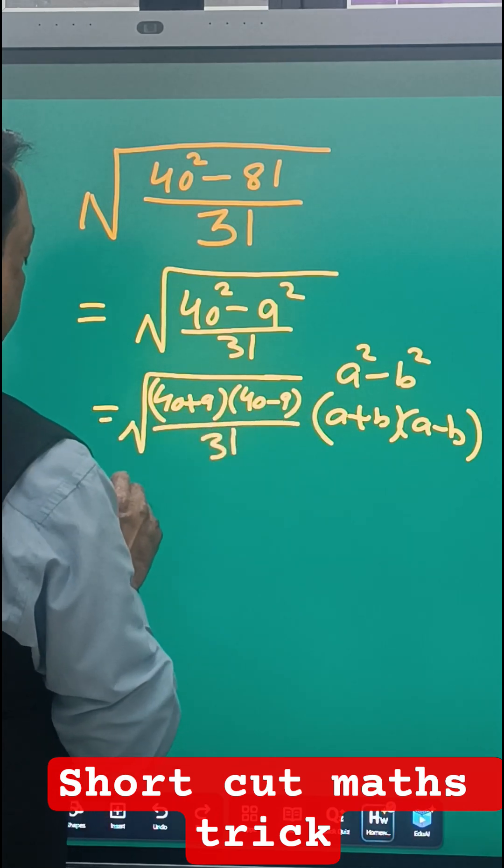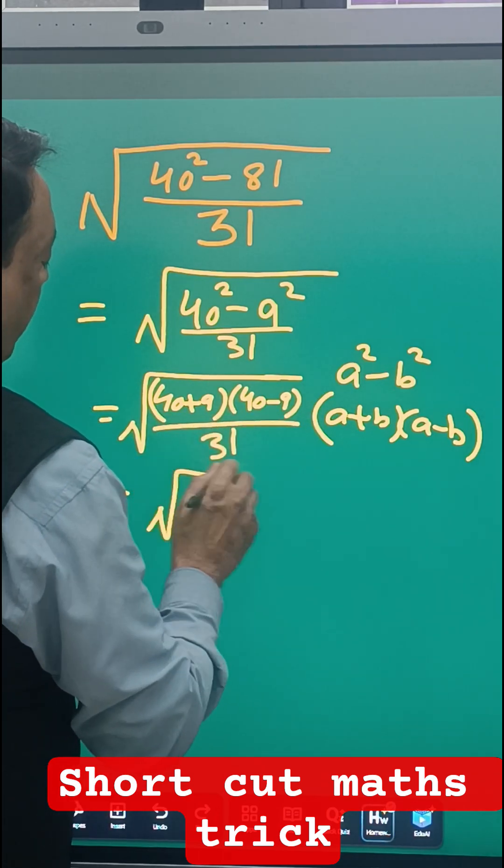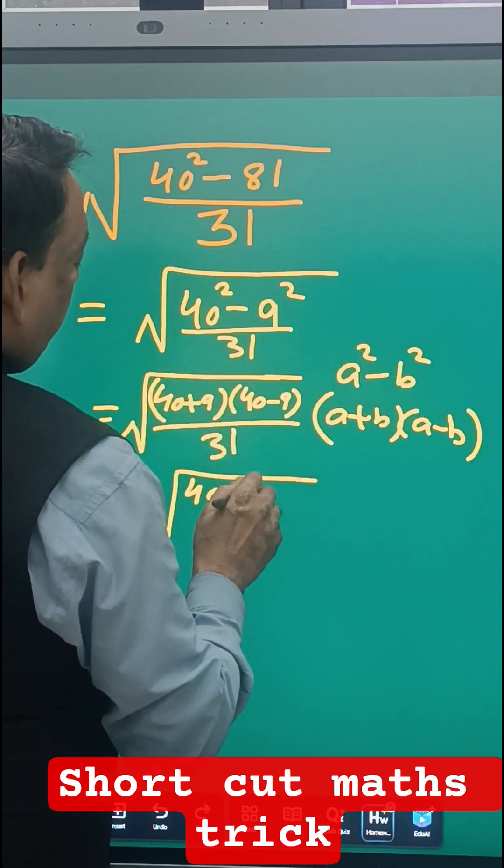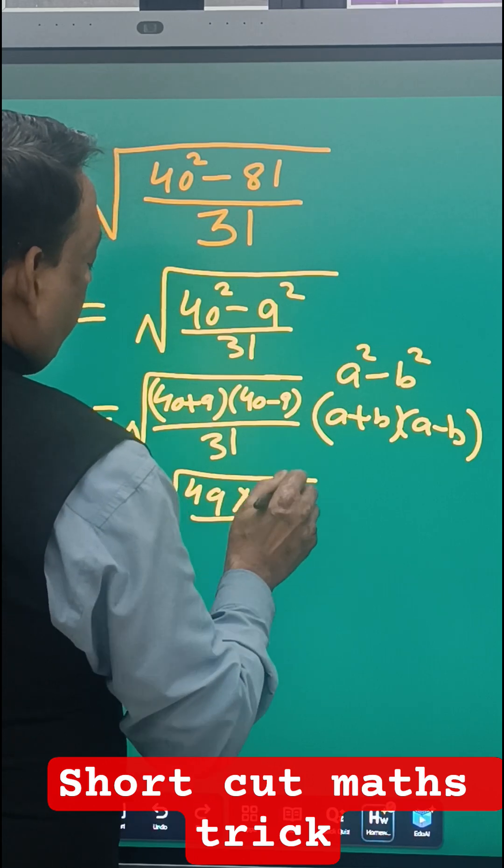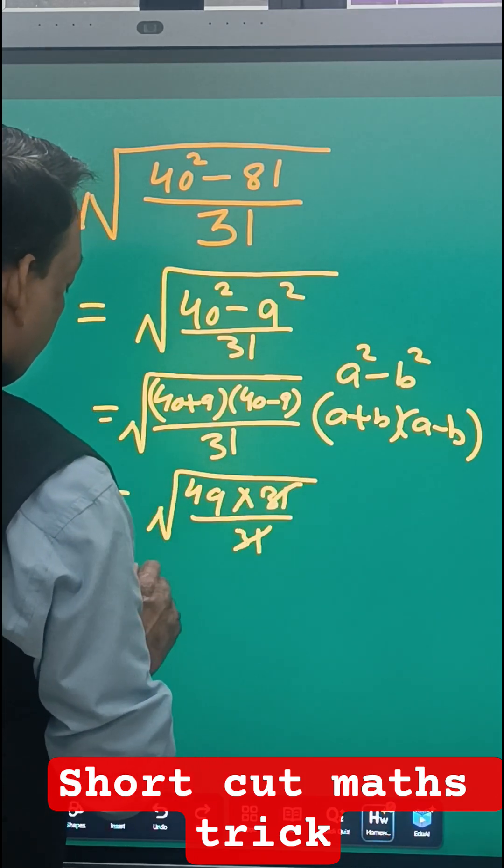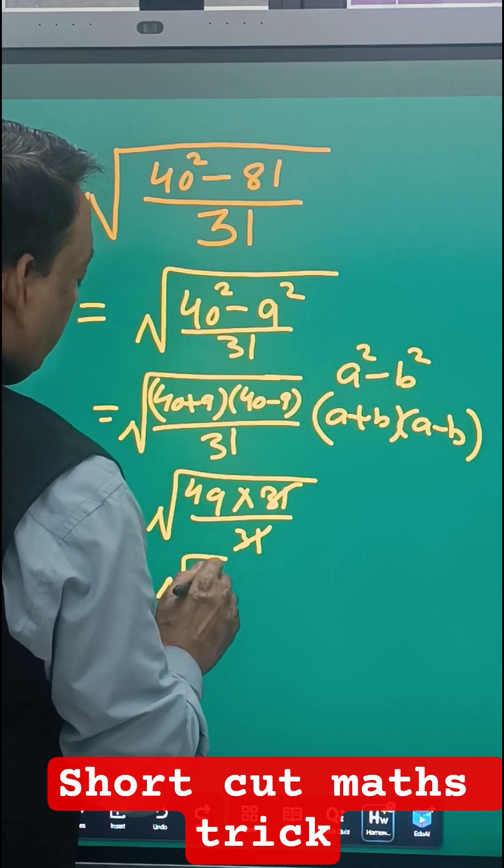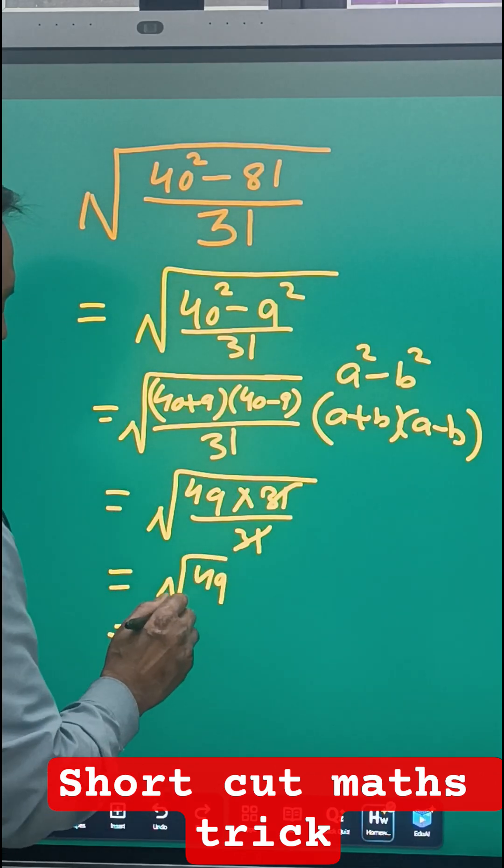Now we will be having here 49 times 31 (40 minus 9 will be 31) upon 31, and then this gets cancelled. Root 49, and the value of root 49 is equal to 7.